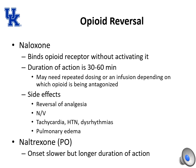Opioids can lead to overdoses, but fortunately we have reversal medications like naloxone and naltrexone. Naloxone binds to opioid receptors without activating them; its duration of action is 30 to 60 minutes, so it may need to be repeated or an infusion started depending on which opioid is being antagonized. Side effects of naloxone include reversal of analgesia, nausea and vomiting, cardiovascular effects like tachycardia, hypertension, and dysrhythmias, and even flash pulmonary edema. Naloxone is typically given IV but can also be given as a nasal spray or subcutaneously. Naltrexone is given PO with a slower onset but longer duration of action.